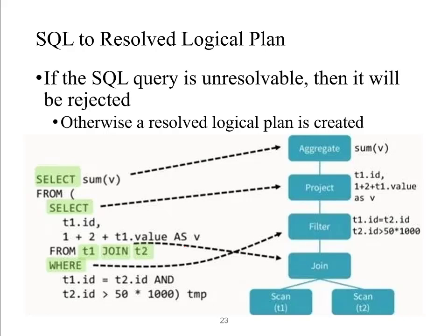This figure shows an example of a SQL query and its corresponding resolved logical plan. We have a SUM here, so it's an aggregate; the SELECT is a project; WHERE is a filter; and there is a JOIN where we scan T1 and T2. The WHERE condition is listed, the SELECT values are listed, and the aggregation function is shown. Note that there is no optimization so far in this logical plan.